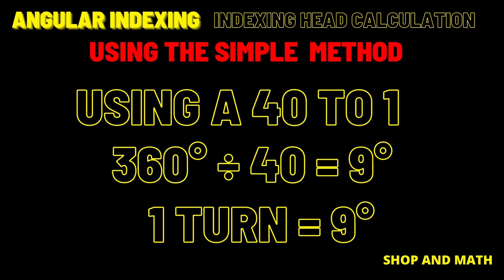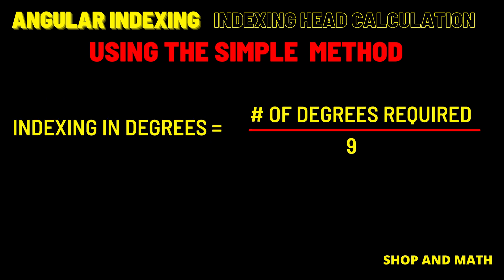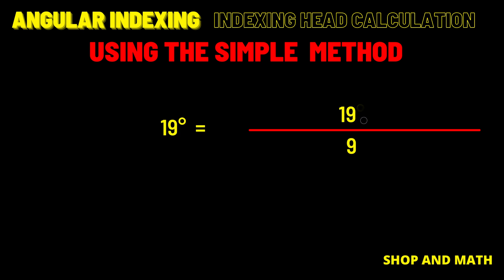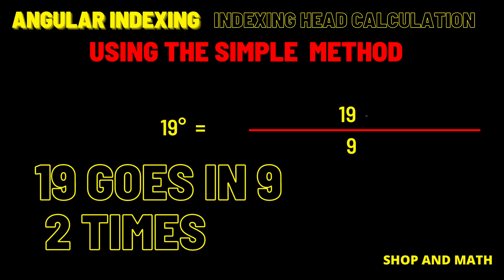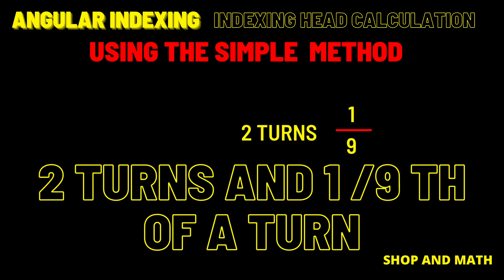When the angular indexing is given in degrees, this is the formula to use. Indexing degrees equals the number of degrees required over 9. So in our case 19 over 9. 19 goes into 9 two times. 9 times 2 is 18. 19 minus 18 equals 1. We have two full turns and one ninth of a turn.